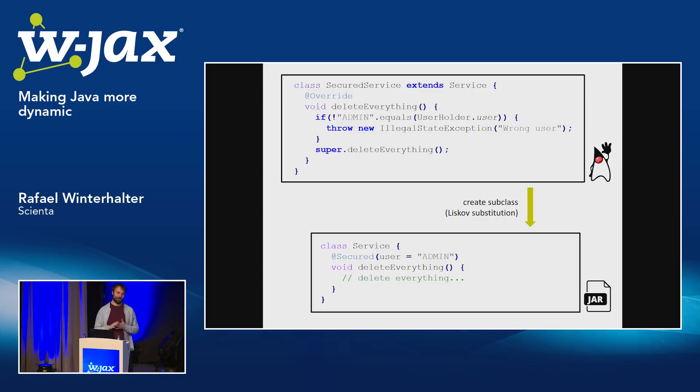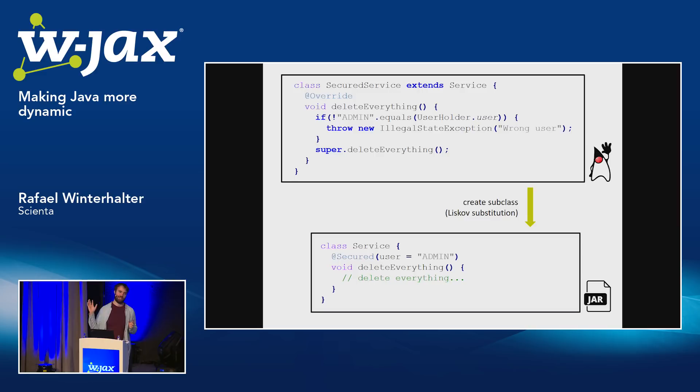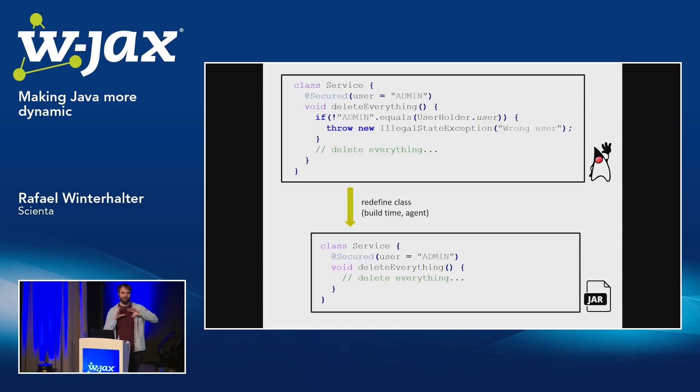Traditionally, people didn't really talk so much about startup time. If an application started up in five or six seconds, that was just fine. Most applications took much longer — half a minute, even a minute — for old application containers like Tomcats and WebSphere. But with failover systems where you let a Java application crash and then re-spin it, startup time has become more and more important. This is why interfering with code at build time has become more popular.